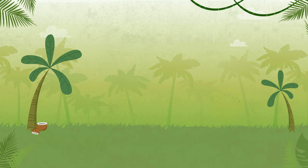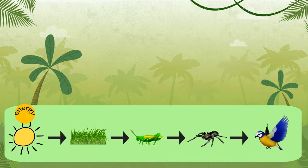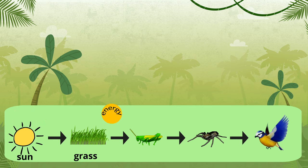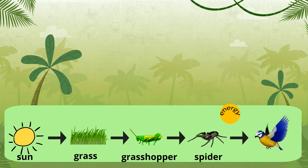Here's one food chain. The energy is being transferred from the sun, to the grass, to a grasshopper, to a spider, and then a bird.